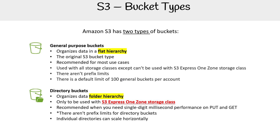Individual directories can scale horizontally, which is really important to understand — now that we actually have folders, it's good to know they do scale. There is a default limit of 10 directory buckets per account; whether you can use a service limit increase is possible, but I didn't look into it as this feature is very new. The most important takeaway is that there are two bucket types, and directory buckets are for the S3 Express One Zone storage class.